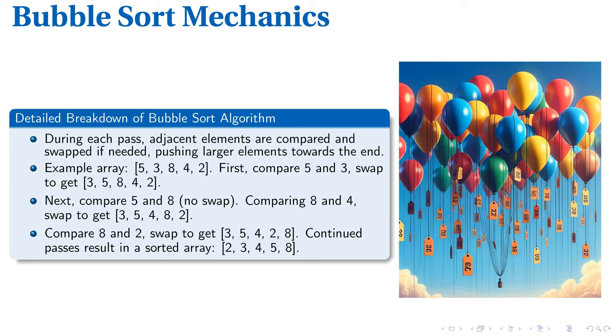This methodical checking and swapping continues until our array is sorted as 2, 3, 4, 5, 8. That's bubble sort, arranged and orderly just like our newly tidied room.